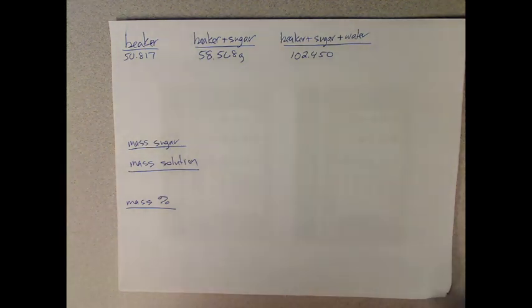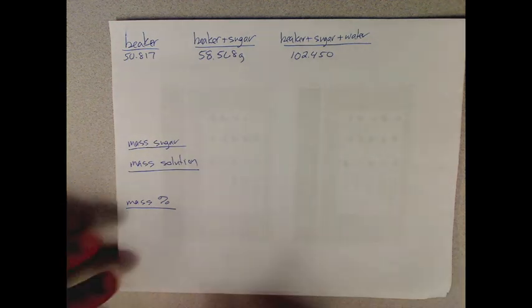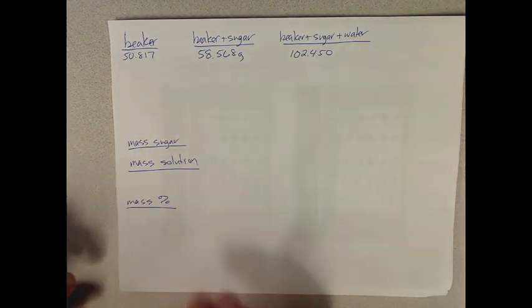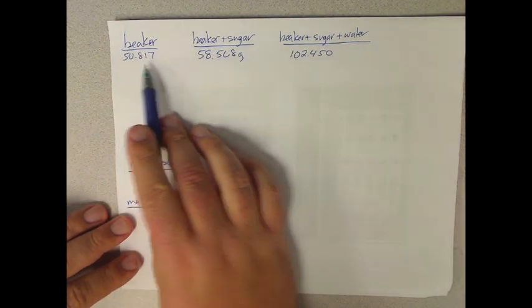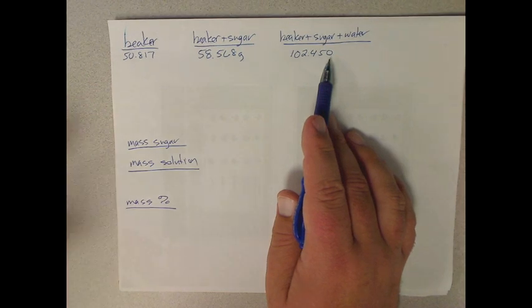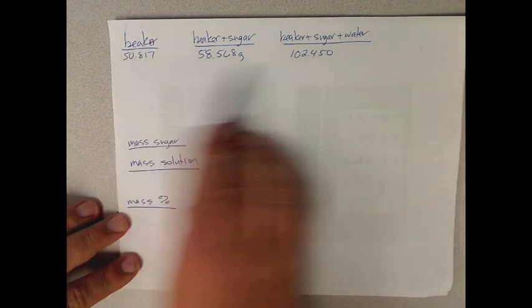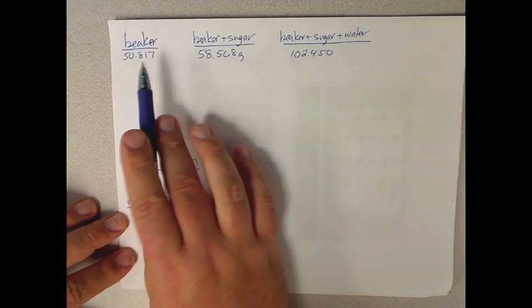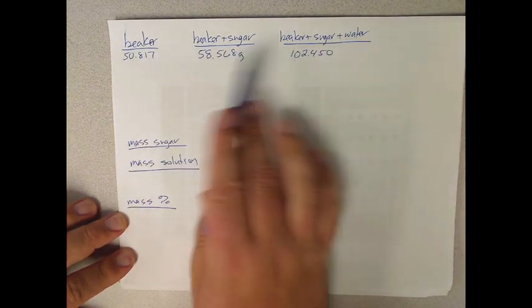So let's first start with just our measurements from when we made the solution. This is just one example. Here we've got the mass of the beaker, the mass of the beaker once we added some sugar, and the mass of the beaker when we added the sugar and the water. I would prefer doing this rather than taring the beaker because you need to know the mass of that beaker.